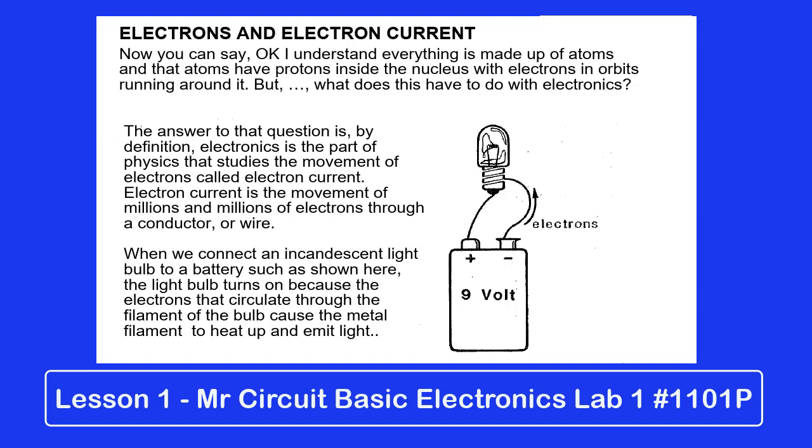When we connect an incandescent light bulb to a battery, such as shown here, the light bulb turns on because the electrons that circulate through the filament of the bulb cause the metal filament to heat up and emit light.